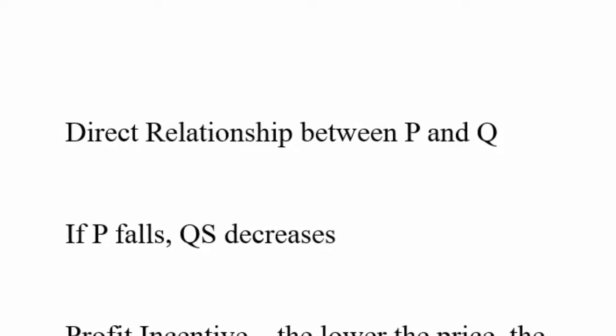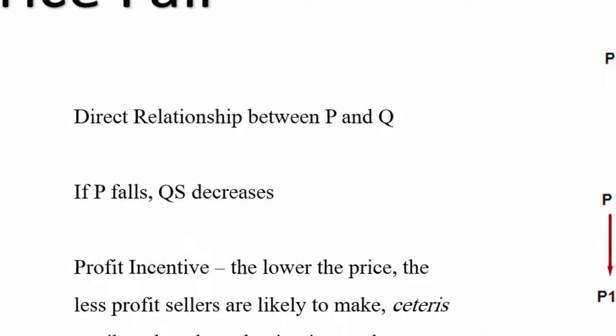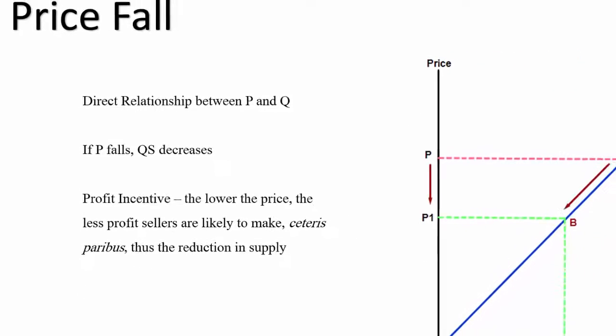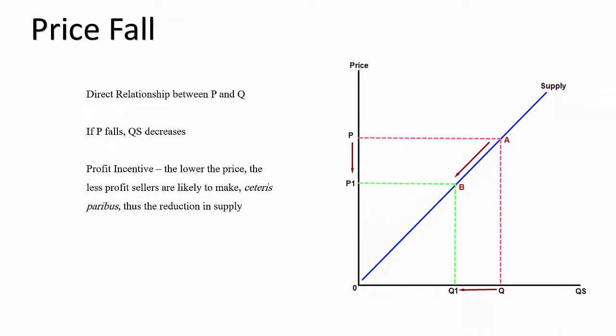Students tend to call it a proportional relationship but it's not necessarily proportional because proportion means they're going to be changing by the same rate, but that's not necessarily the case. That depends on the elasticity of the supply curve. So it's called a direct relationship and it's important to remember that.